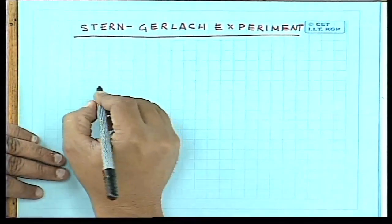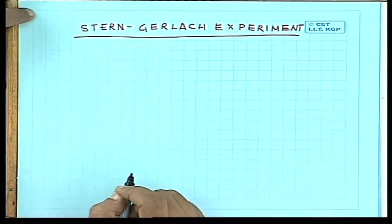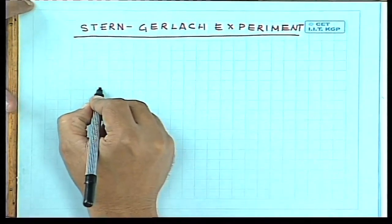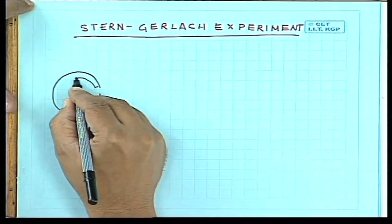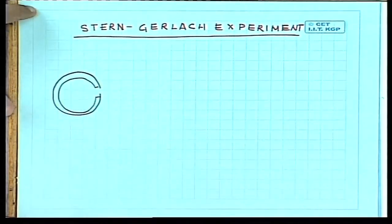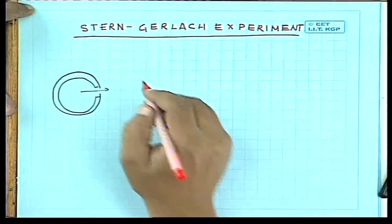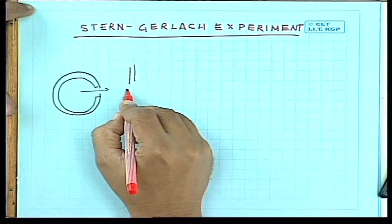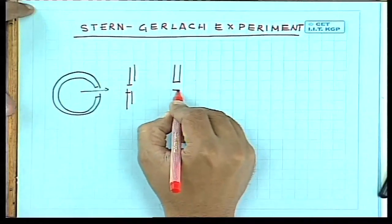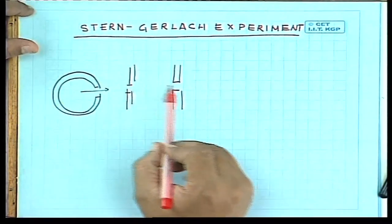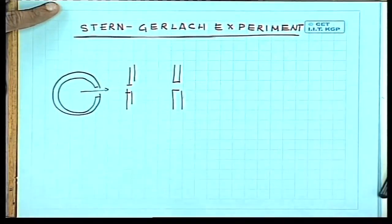In this experiment, there is an oven. Let me first draw the oven with a small opening inside which silver atoms are heated. These atoms come out and then there is another screen with a small opening which acts to collimate the silver atoms. So there are two screens with slits over here. This ensures that all the silver atoms which pass through are the ones traveling in this direction.